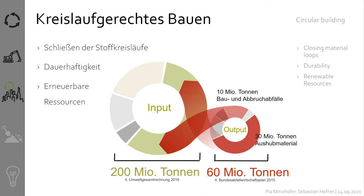Simplified, we see a larger circle representing the resource input for Austria, contrasted with a smaller circle representing the output of resources — that is, waste. What this graphic shows is that even if we could recycle 100% of our waste, we would still be far from meeting our resource needs. The continuously growing demand for raw materials for buildings and infrastructure is not compatible with the natural boundaries of our planet.